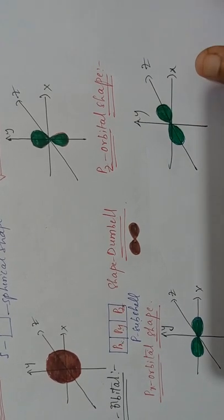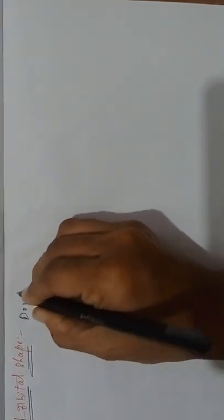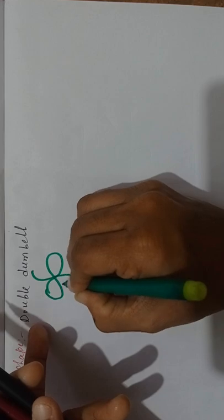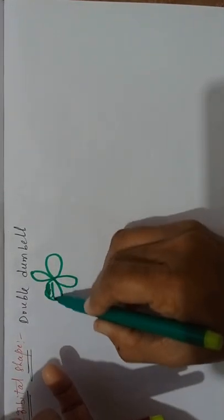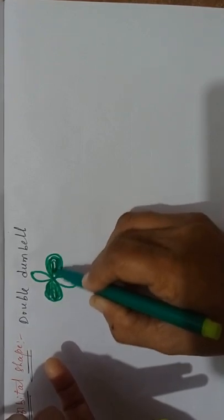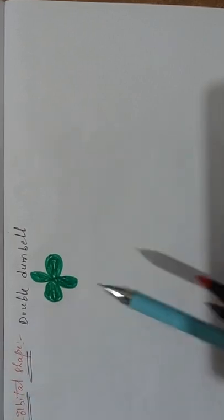This is about the P orbital shape. Now I am going to discuss about the D orbital shapes. In the D orbital, the D orbital shape is double dumbbell. In the D sub shell, total five orbitals will be there. This is the double dumbbell shape.